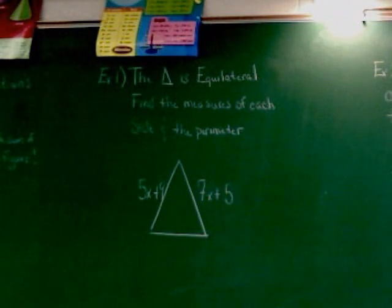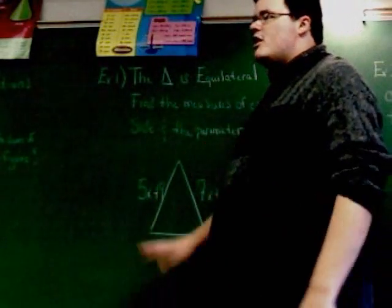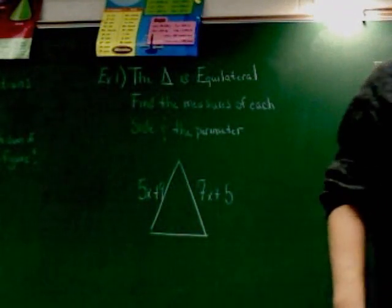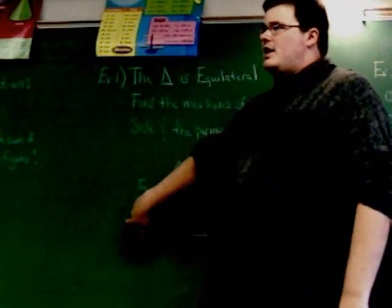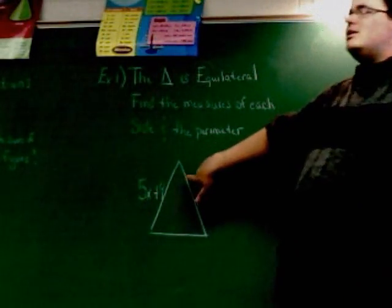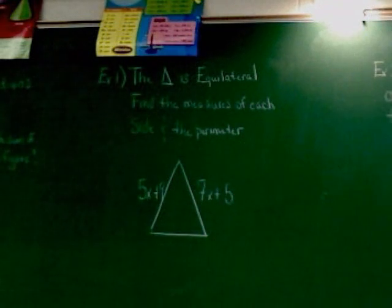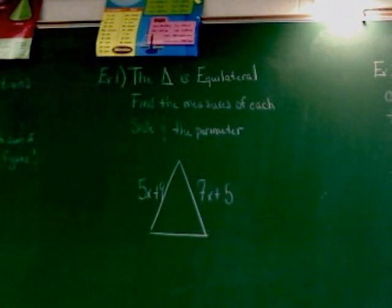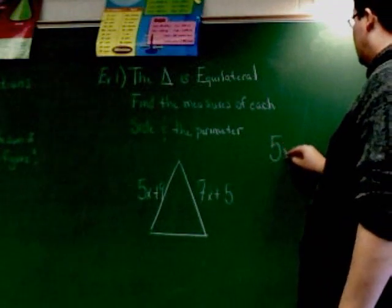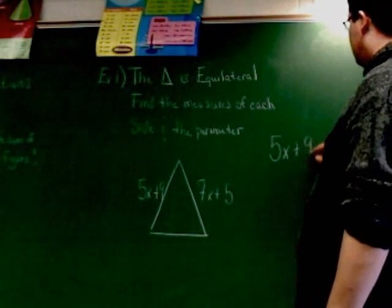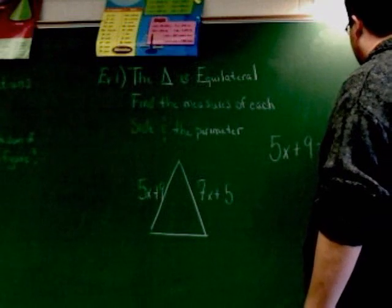You can see the thing is that on this one, we don't just have a side with a number. We have an equation. But think about what we do know. We know that this side is the same as this side. So if I just set those two equal to each other and find x, I should be able to find out how long the side is. So I'm going to take 5x plus 9 and set it equal to 7x plus 5.